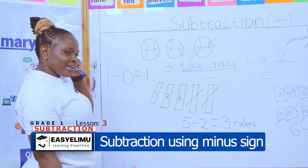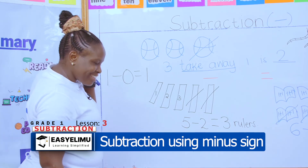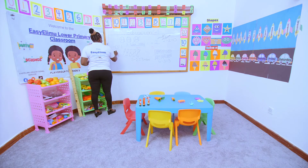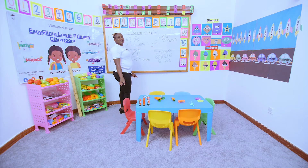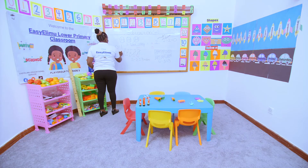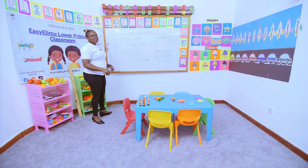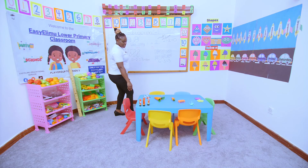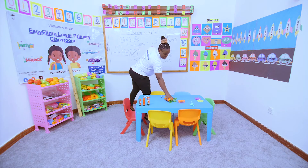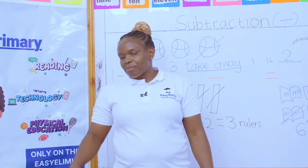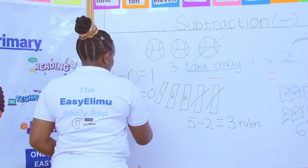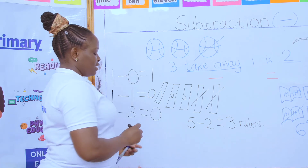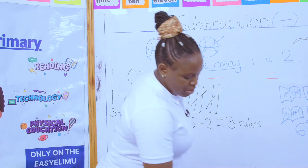Any number taking away itself — I am one, then I take away myself, what remains? Nothing. Any number take away itself remains nothing. These are three carrots, and all three carrots are taken away. I used all of them to cook — how many are remaining? Zero.